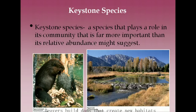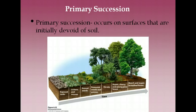A keystone species is one that plays an important role in the community far more important than its relative abundance might suggest — there may not be high numbers of this species, but the survival of the ecosystem depends on their presence. For example, beavers build dams that create new aquatic habitats and watering holes for other organisms. Another example is sea otters, which eat mussels and kelp to prevent runaway population growth, making them really important to aquatic ecosystems.